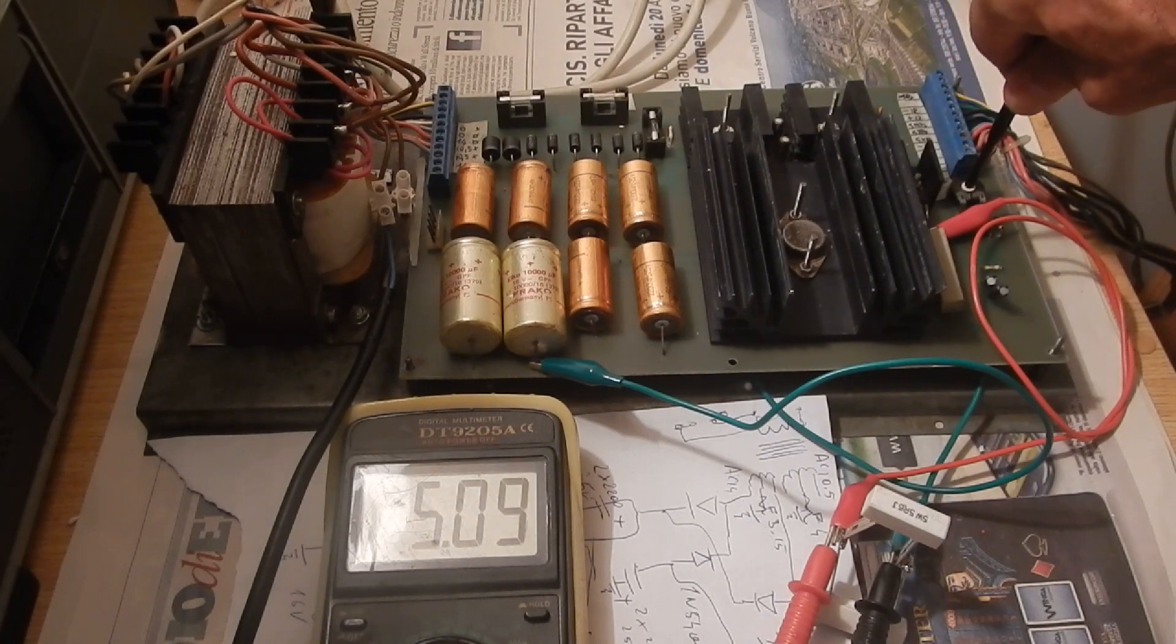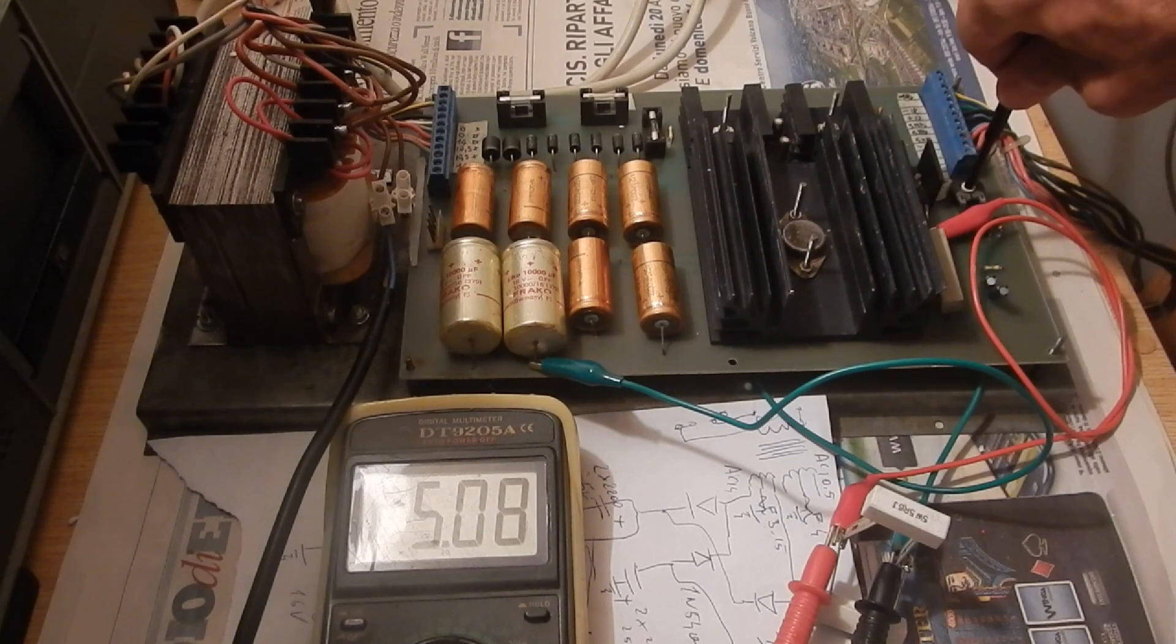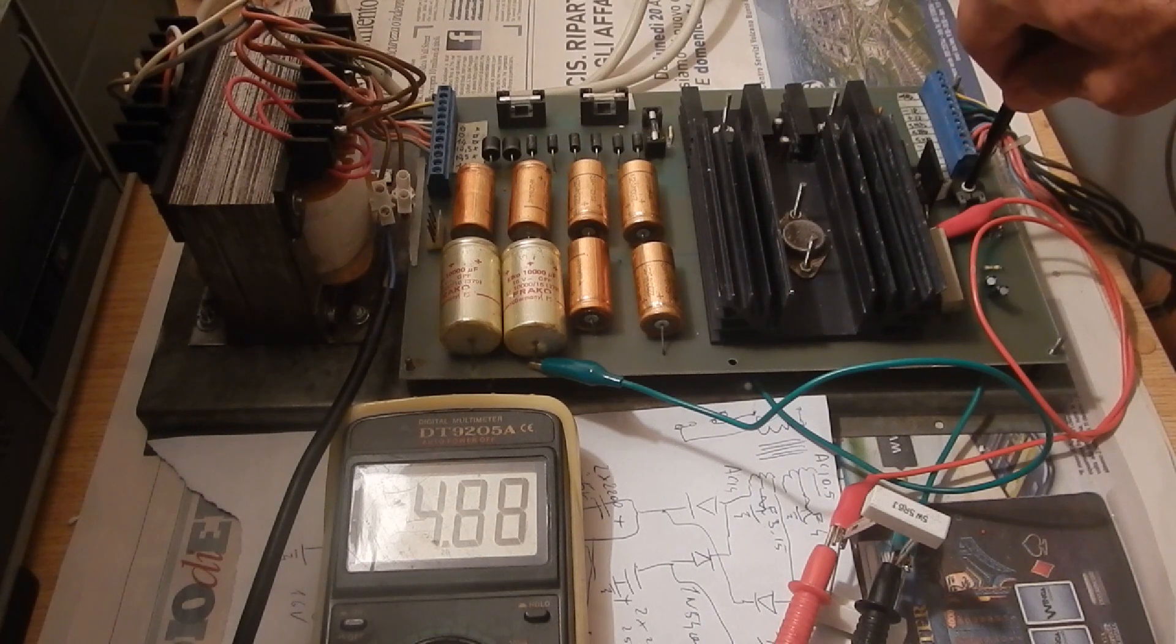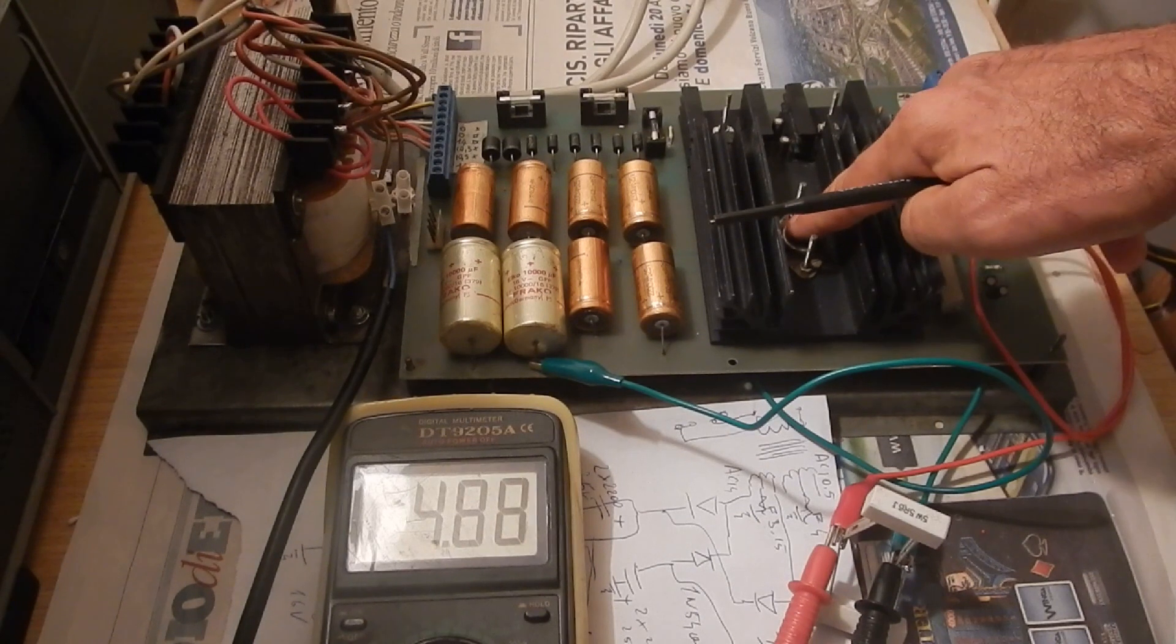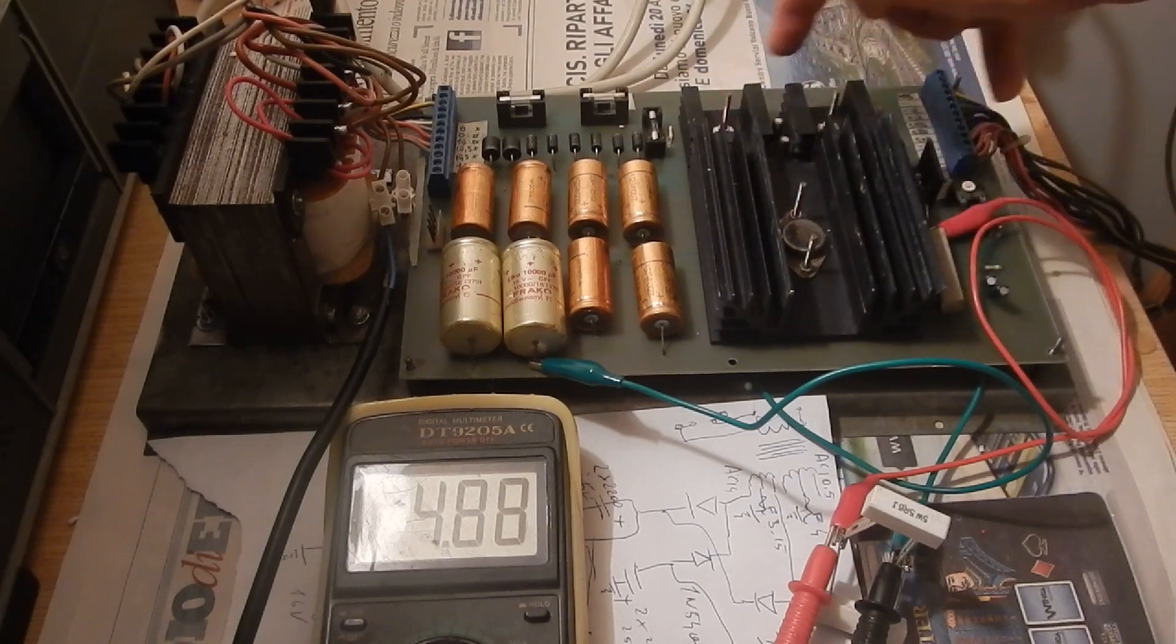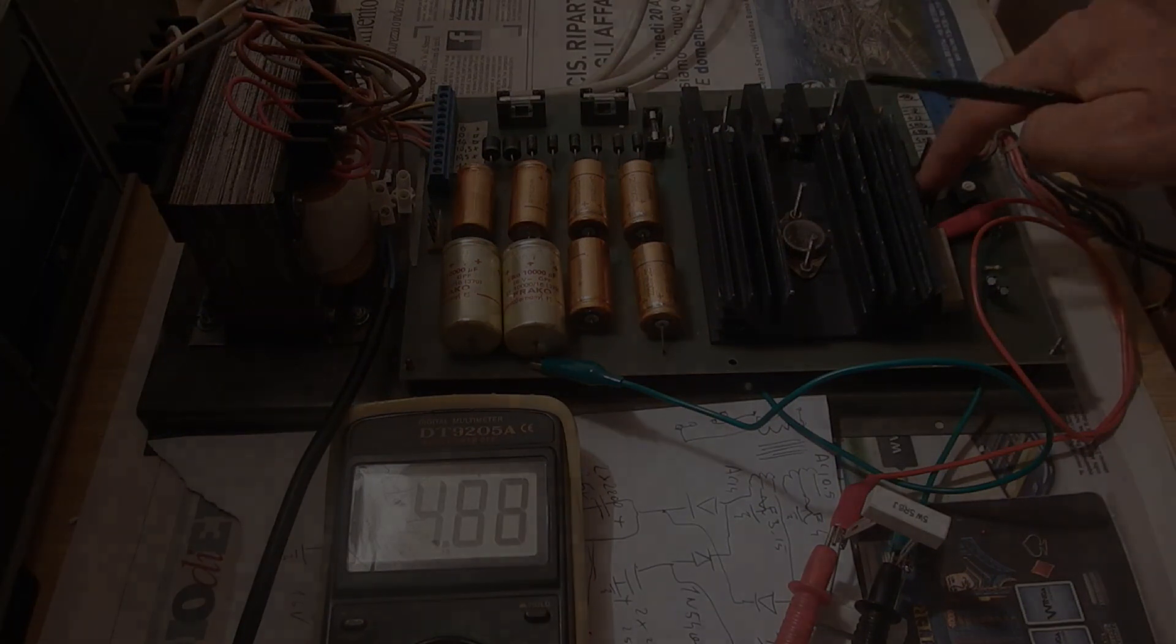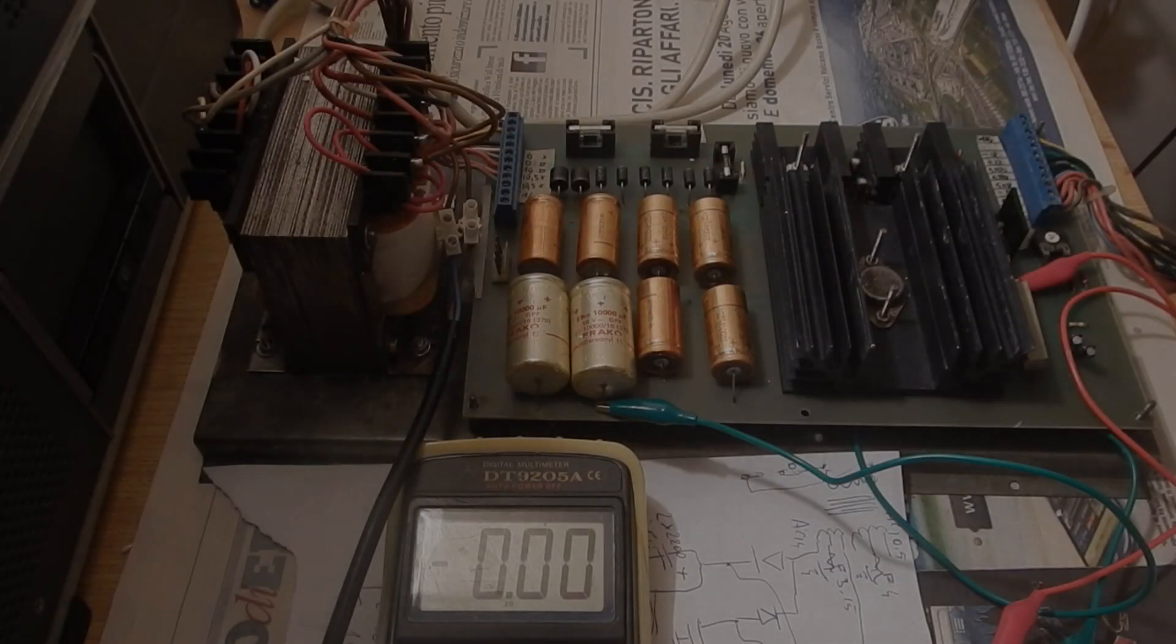We then verify that the voltage can be varied with the trimmer. The final adjustment must be done when the supply is in its cabinet and by measuring the voltage right at the game PCB input. With the minimum load, the linear regulator must barely get warm.